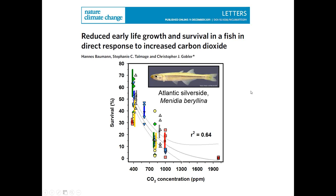This is a series of acidification-only experiments — six different experiments, with different colors representing different broods of embryos. As you drive up the CO2 levels, you drive down their survival. Even across all experiments, the trend is clear: these fish are sensitive to acidification at the embryonic stage, and the CO2 levels used are within the range we're seeing in coastal ecosystems. These fish spawn beginning in May and spawning can go on into July — within the time when we're seeing acidification in estuaries.